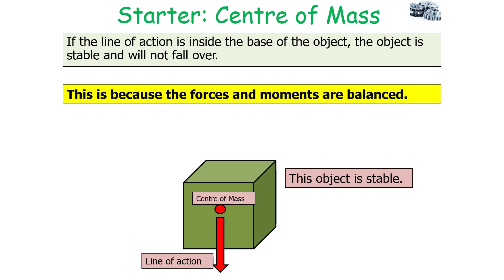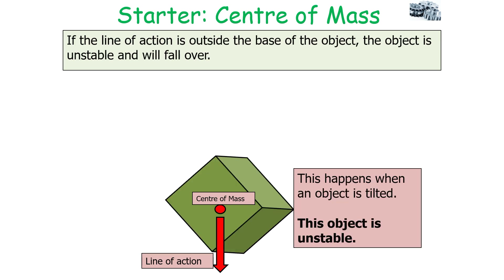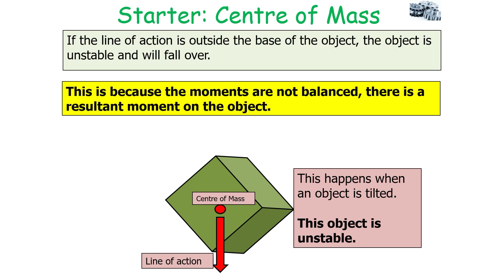This is a very important idea: if the line of action is inside the base of an object, we know the object will be stable and will not fall over, because the forces and moments acting on the object are balanced and there is no resultant force causing it to topple. However, if the line of action is outside the base of the object, the object is unstable and will fall over. This can happen when an object is tilted — the moments are no longer balanced, there is a resultant moment, and this causes the object to topple over.